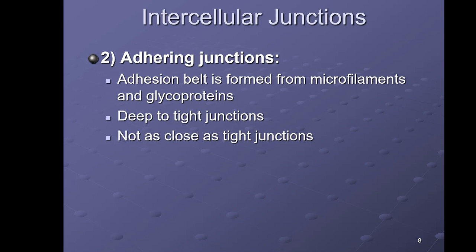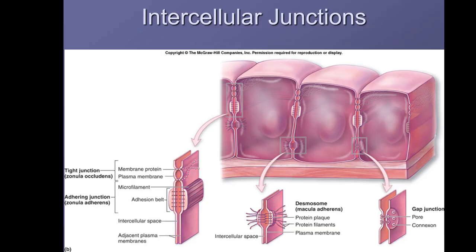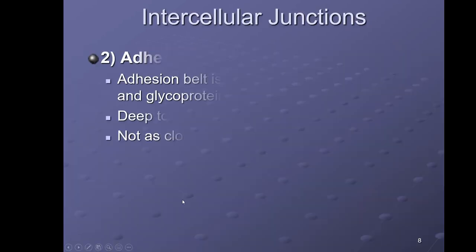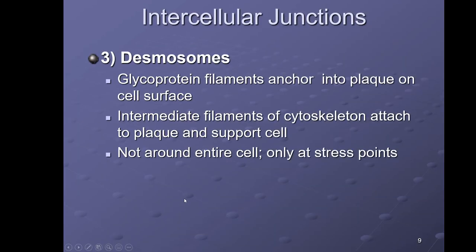Adhering junctions are located a little bit deeper than tight junctions and they form a belt that goes around the entire cell, so they don't hold the cells together quite as tightly. Going back to the picture, you can see the adhering junction — that belt formed around the cell. These are always going to be deep to the tight junctions.